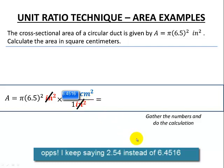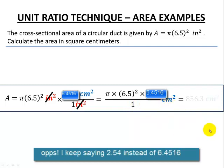I can gather my numbers and do the calculations. So the pi times the 6.5 squared times the 2.54, all divided by 1, centimeters squared. My overall answer to one decimal place comes to 856.3 square centimeters.